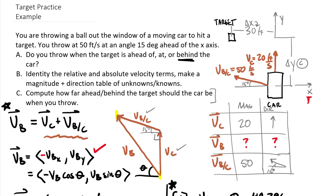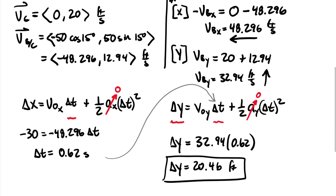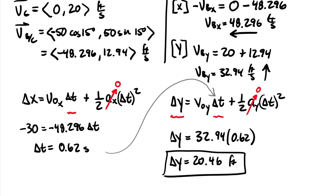This example demonstrated the vector component approach, though a graphical approach using the law of cosines would also work. The table of knowns and unknowns is a really important step — list all terms, identify what you know and don't know before moving forward. Note that we had to reach back into particle motion kinematics equations to answer what was asked. If only the velocity components were needed, we could have stopped at VBX and VBY. Hope you're having an awesome day!